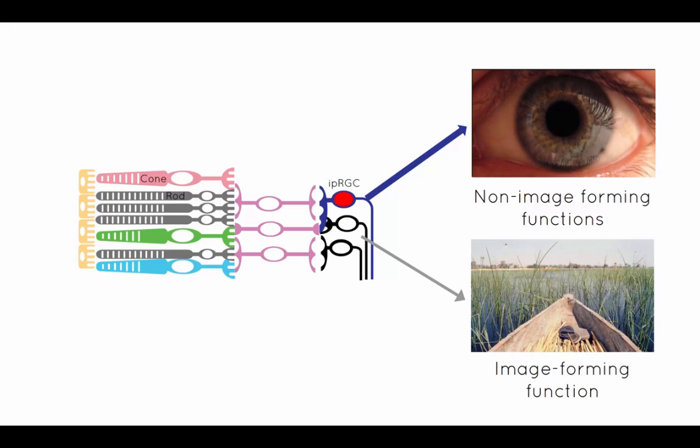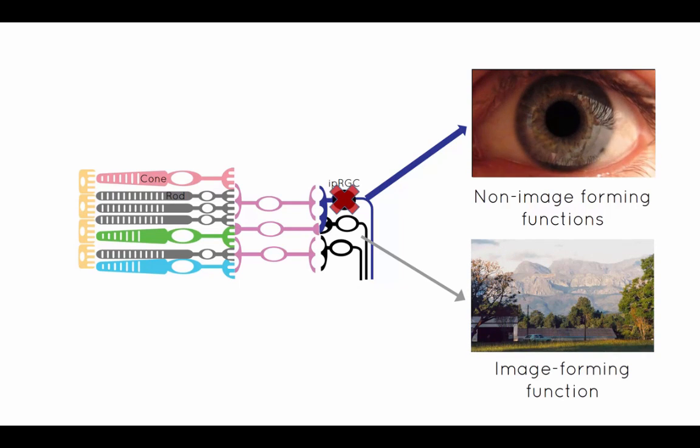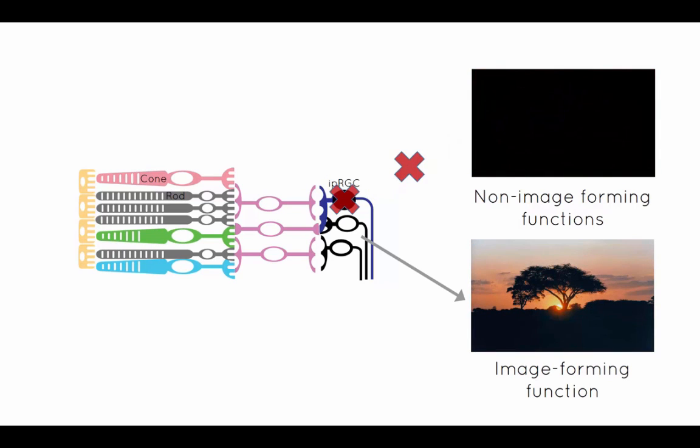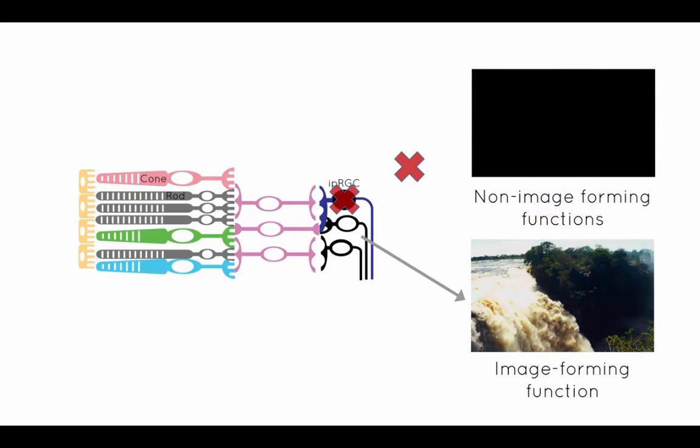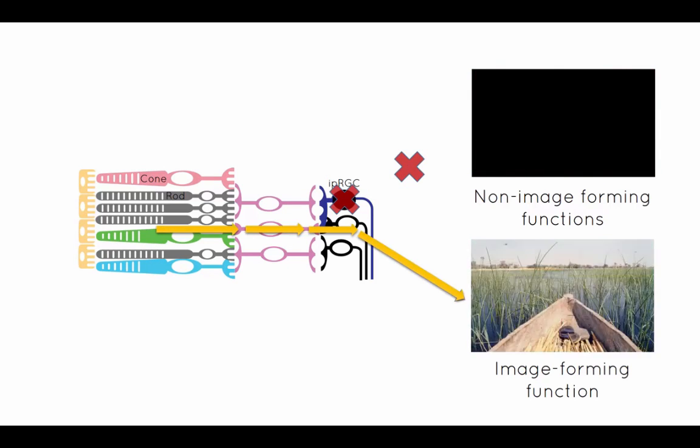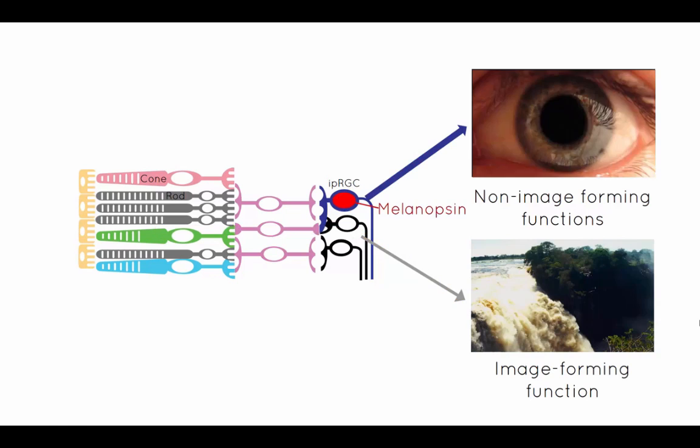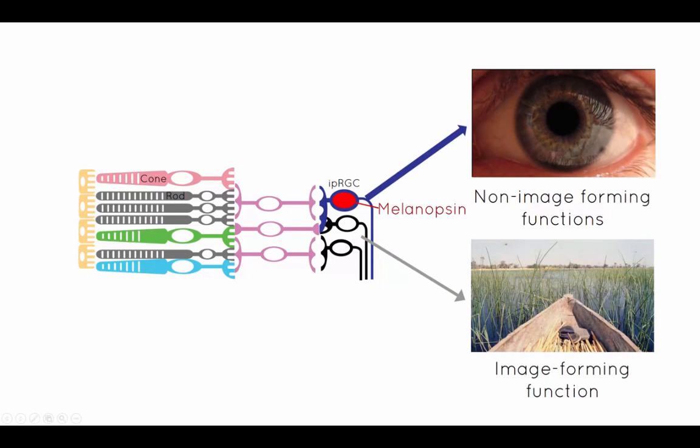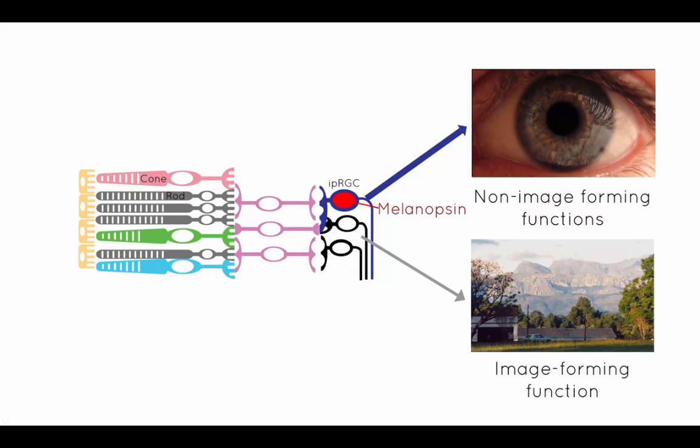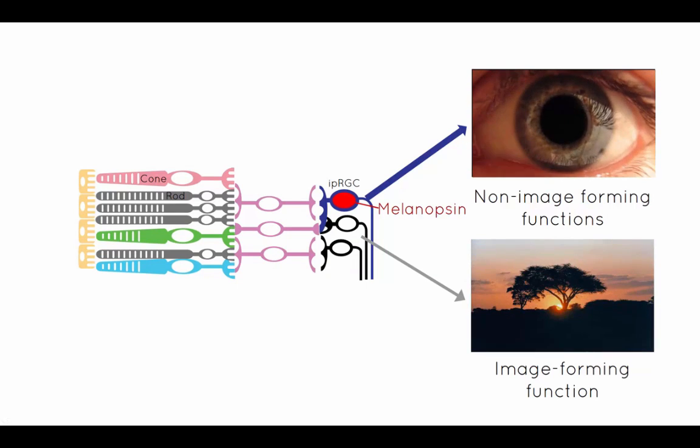In addition, when only IPRGCs are ablated or destroyed, it results in the near-complete loss of non-image-forming functions, while leaving the image-forming functions intact. However, the IPRGCs are not the only photoreceptors responsible for non-image-forming vision. Rods and cones also contribute.